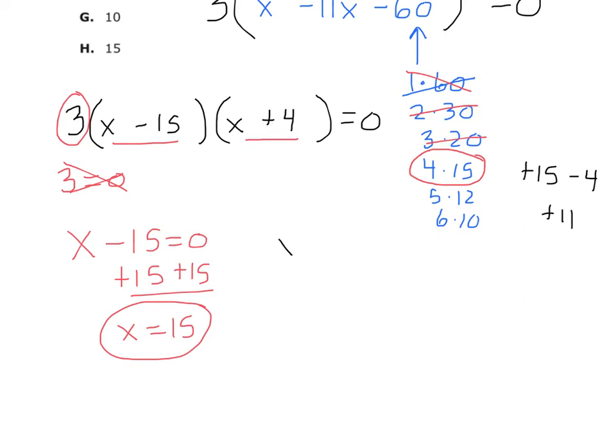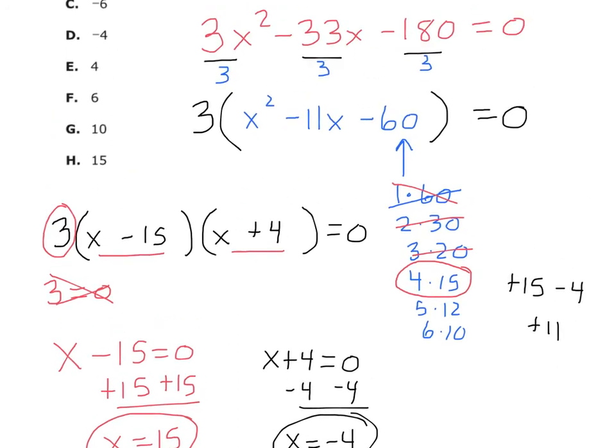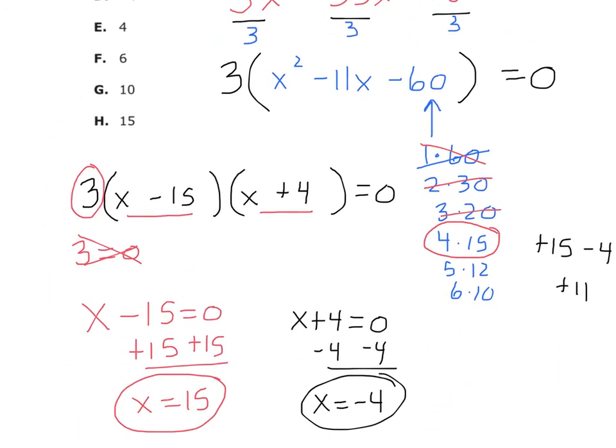And then let's take the other one, x plus 4, and set it equal to zero. Subtract 4 on both sides, and so x equals what? Negative 4. And so those are your two solutions. Did you hear me? Those are your what? Two solutions. We got 15 and negative 4.